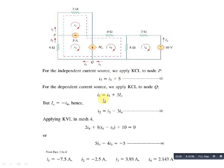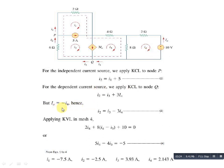The dependent source depends on the 10-volt source. The current Ia flows upward as given in the question, while I4 (assumed clockwise) flows downward — they are in opposite directions. Therefore, Ia = −I4. Substituting this into equation 3 gives: I2 = I3 − 3I4.